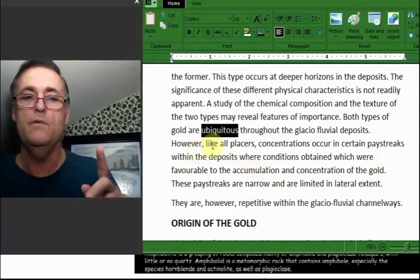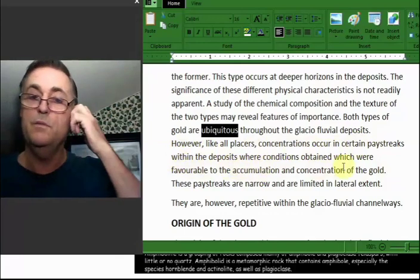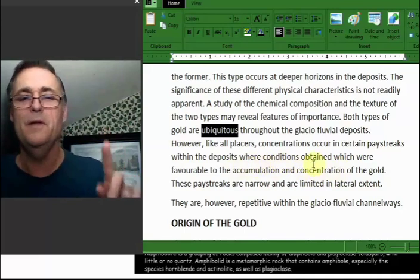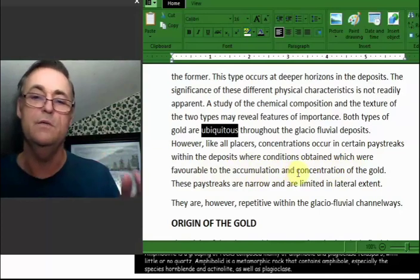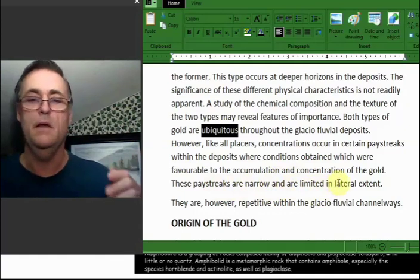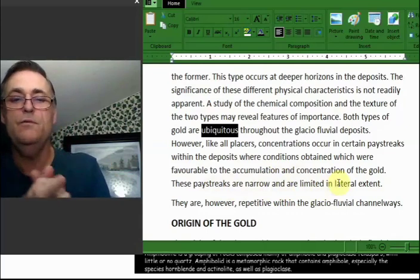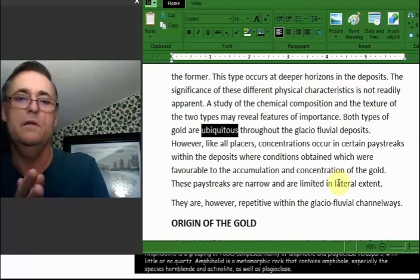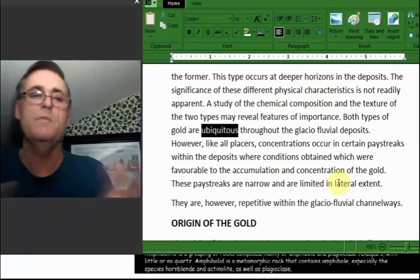And it says here that it's throughout all of it. However, just like a placer, you'll get streaks. So you get streaks where it's more dense. That's what he's saying. I'll reread it just so you know. However, like all placers, concentrations occur in pay streaks within the deposits where conditions were favorable to the accumulation and concentration of gold. These pay streaks are narrow and are limited in lateral extent. So they are, however, repetitive within the glacial fluvial channel ways.